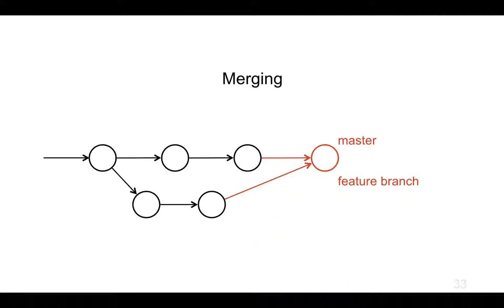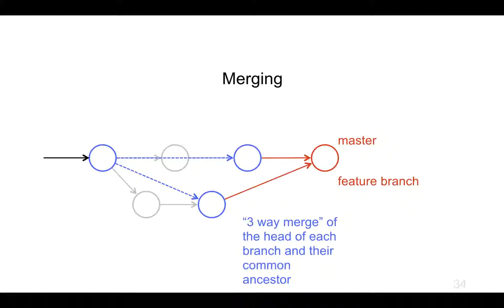The way this works is something called a three-way merge. What git needs to do is look at the latest version in each of the branches and their most recent common ancestor. It doesn't need to worry about the full history of changes along the way — just where we've got to and what the common ancestor was. It then looks at these line by line and works out what has changed in each file and whether it can merge them.